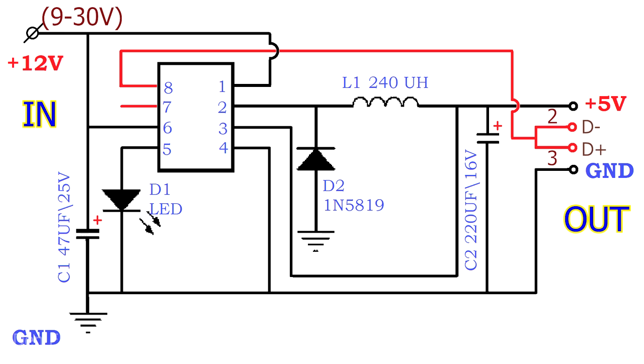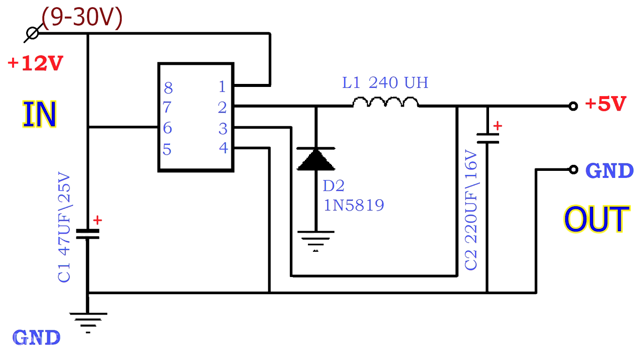The seventh output is empty. The microcircuit does not use it. Also, if someone does not need a signal LED, then it is also not necessary to install it. In this case, the circuit will become simpler and take this form.